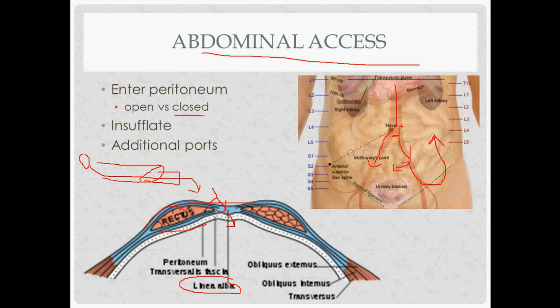Once you're in, place the port, insert the camera, and now you can visualize for the remaining ports. The key is to avoid hitting the inferior epigastric vessels, which come off the external iliac artery. To find your landmarks, identify the medial umbilical ligament — a remnant of the umbilical arteries — then look lateral to it for the inferior epigastrics, and place your ports lateral to those.